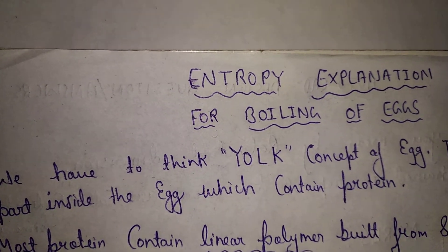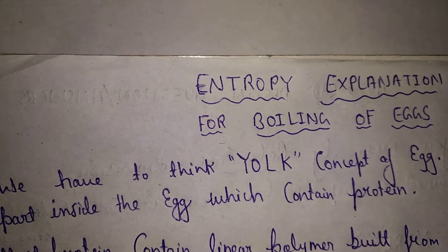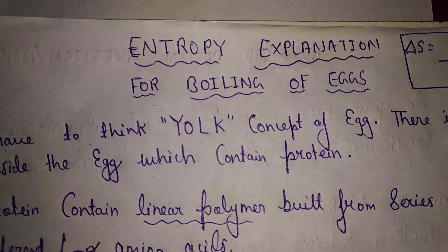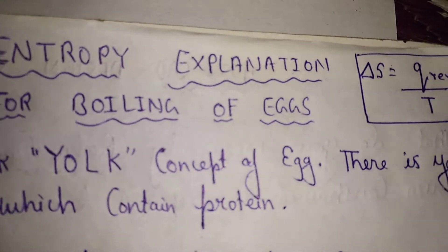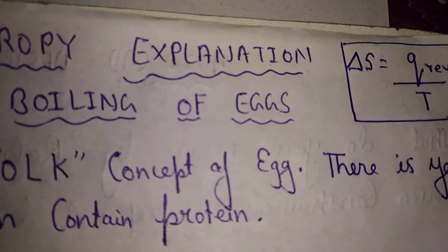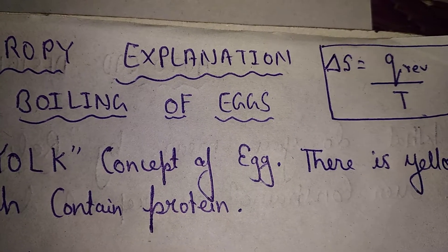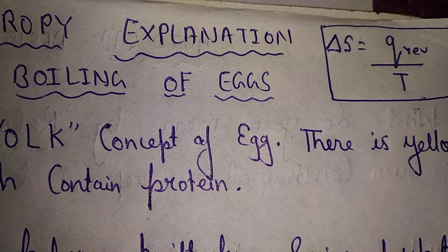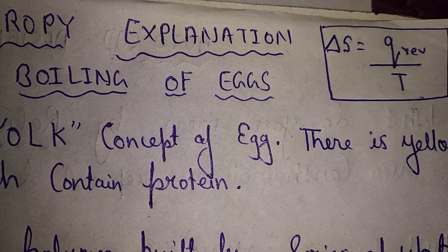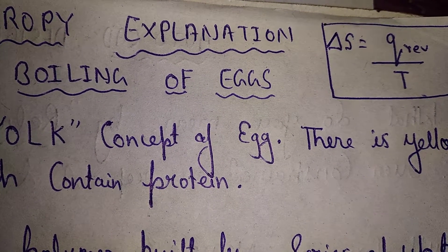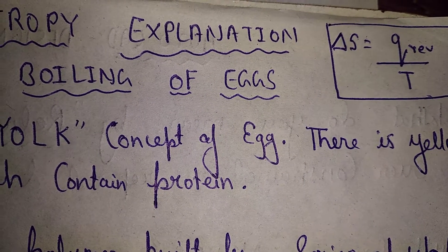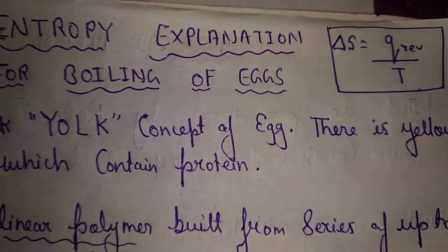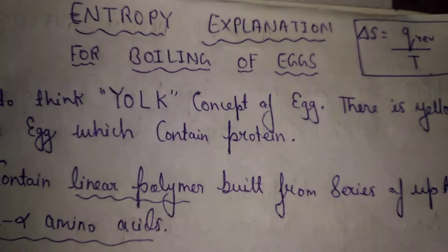Before introducing, I would like to show the formula of entropy. That is delta S equals to Q reversible divided by T. Q is the heat and T is the temperature. It is a reversible process.